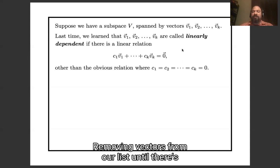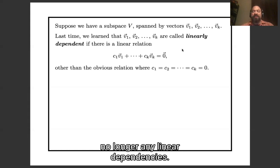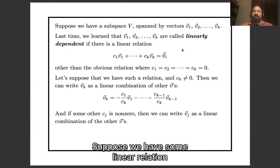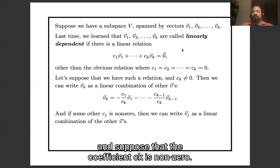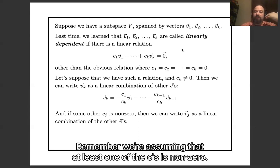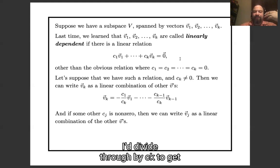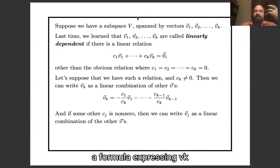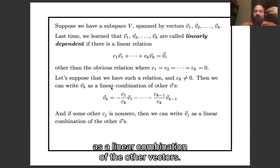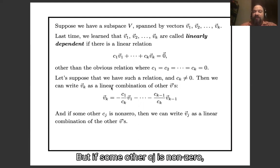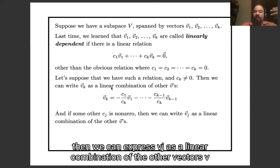Here is the starting observation. Suppose we have some linear relation and suppose that the coefficient ck is non-zero. Since at least one of the c's is non-zero, if ck is non-zero, then we can move ck·vk to the other side of the equation and divide through by ck to get a formula expressing vk as a linear combination of the other vectors. And if some other cj is non-zero, then we can express vj as a linear combination of the other vectors.